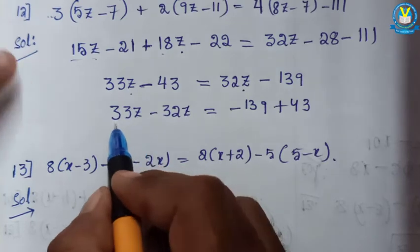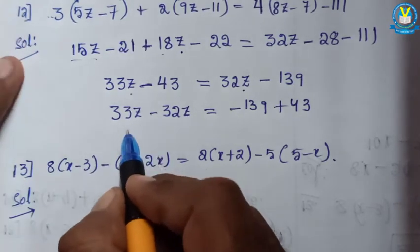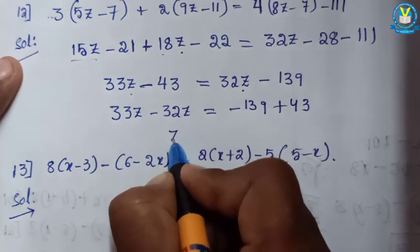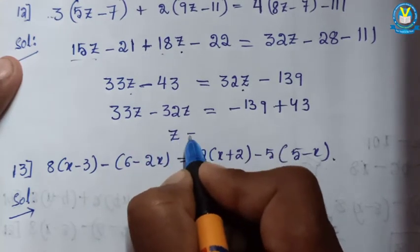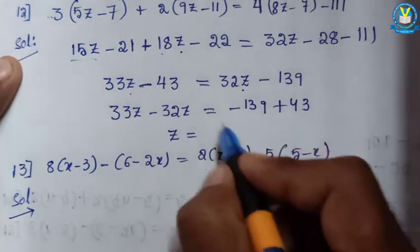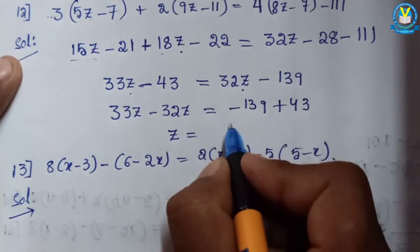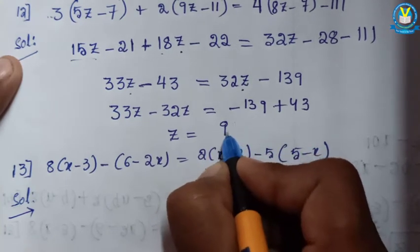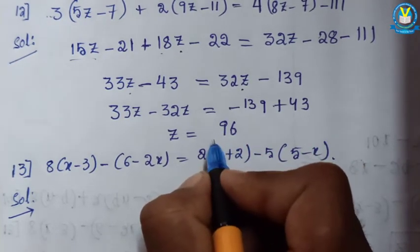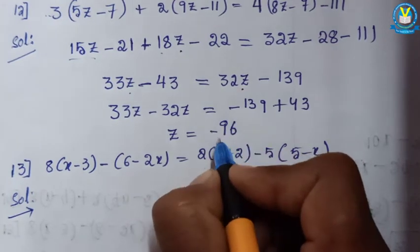So z equals 33z minus 32z which is z. Here having different signs — positive and negative — so subtraction: 139 minus 43. So 139 minus 43 equals 96. But which symbol we can use? We use negative because the biggest value has negative symbol. So z equals minus 96.